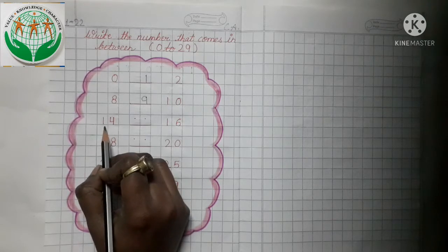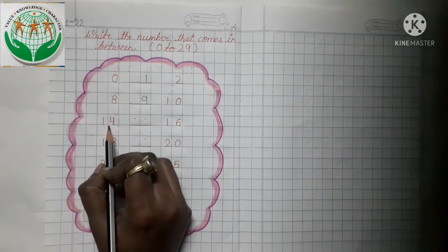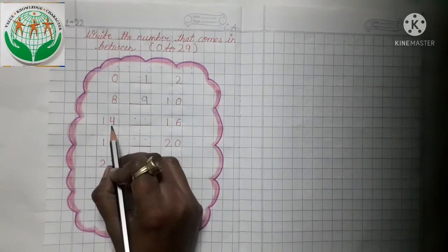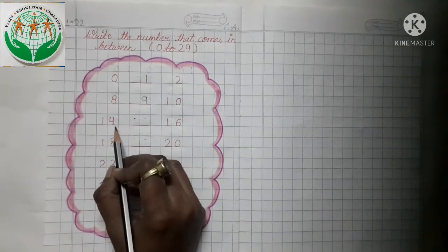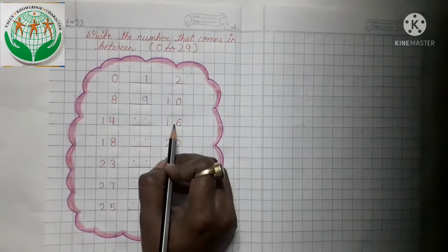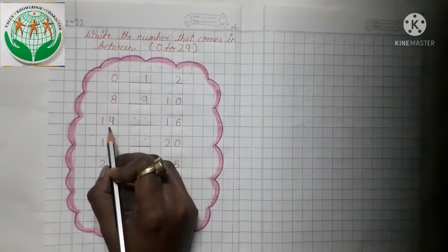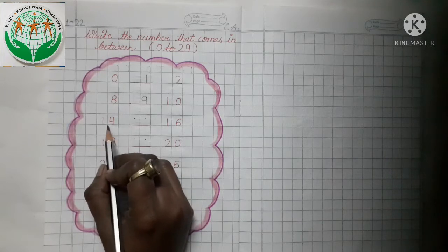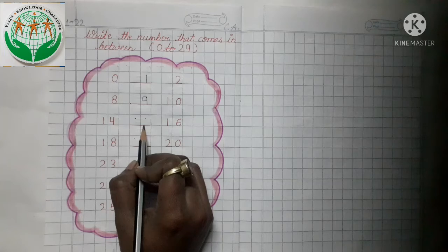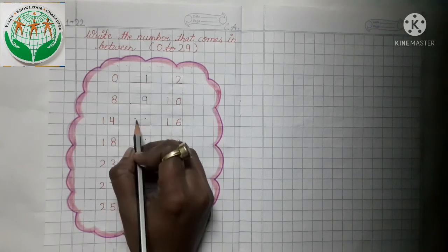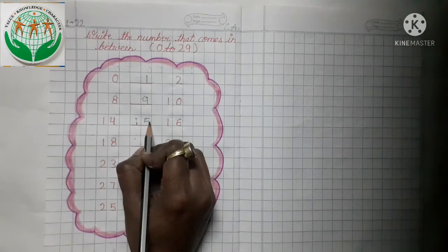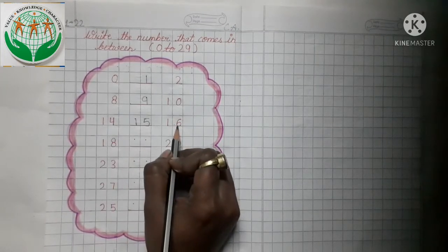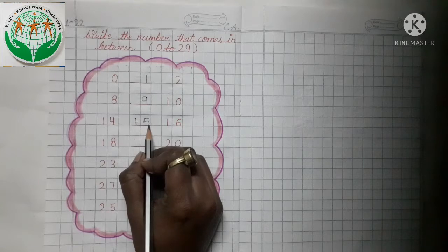This is number 14 and this is number 16. 14, 16 — now tell me what comes in between 14 and 16. Aap ise counting ki tarah bhi read out karke kar sakte hai. 14, then yes — 15 and 16. 14, 15, 16. Toh humara number 15 aaya.